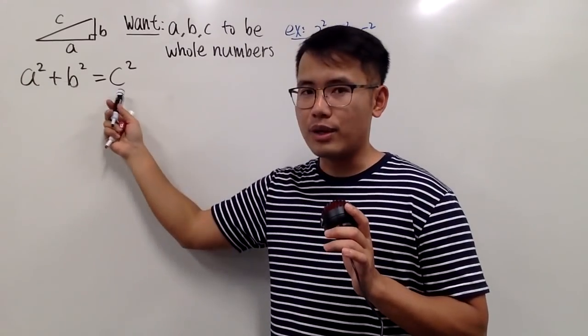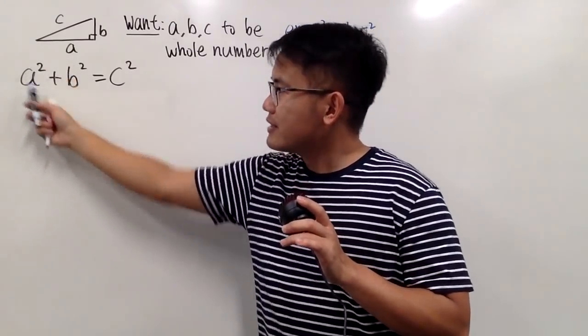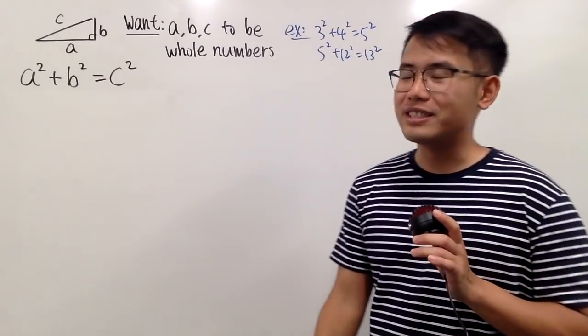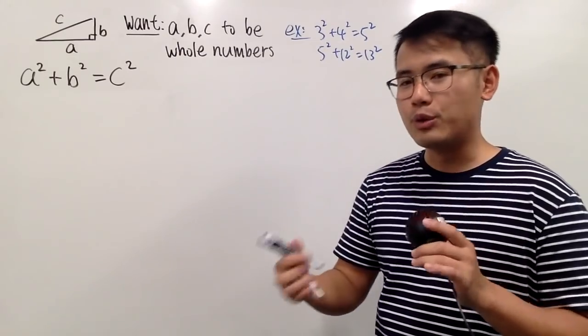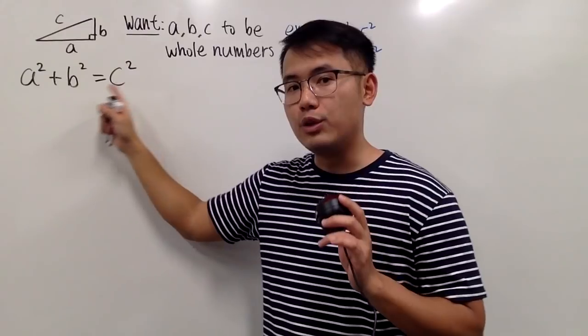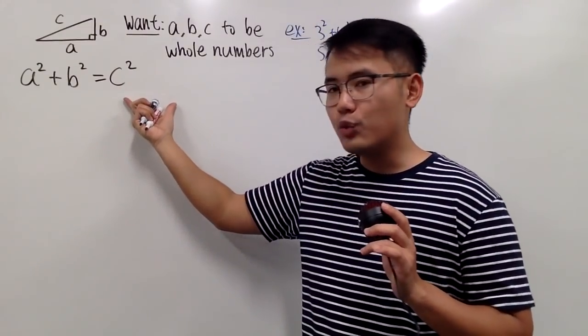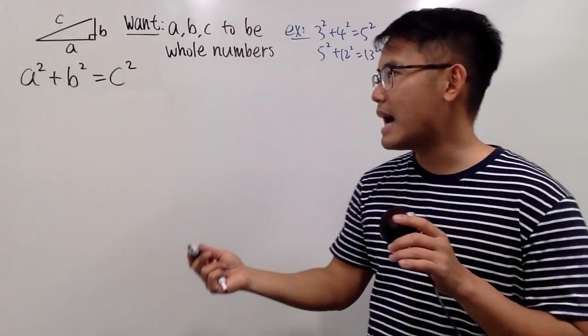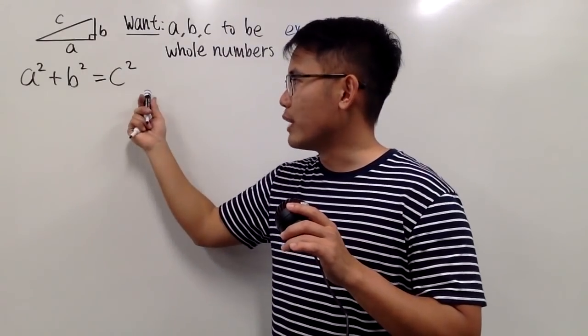So let's focus on this right here first. On the left-hand side, this is the sum of two squares. It's actually not easy for us to work with, because I cannot factor that without using complex numbers. But it's okay, because I can actually move one of these to the right-hand side, and I will be working with the difference of two squares instead.